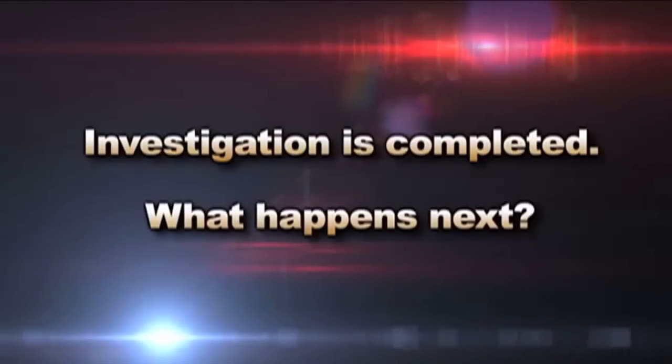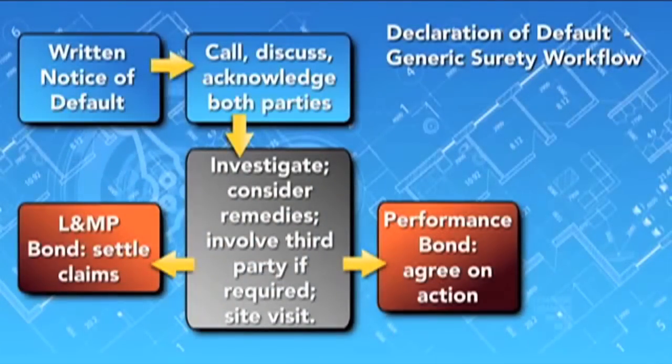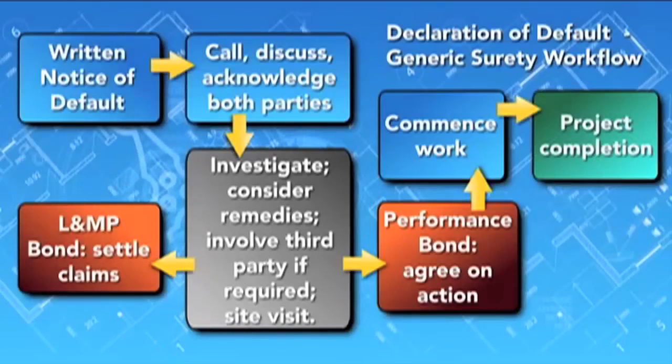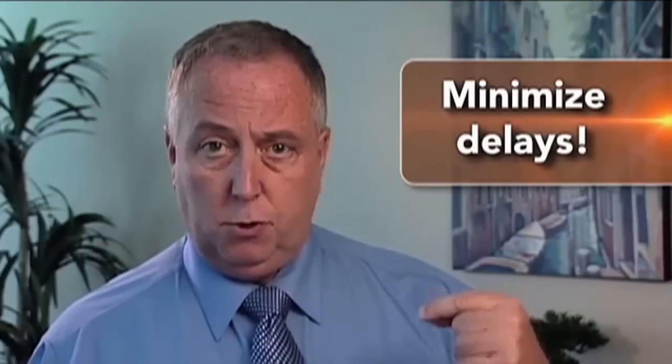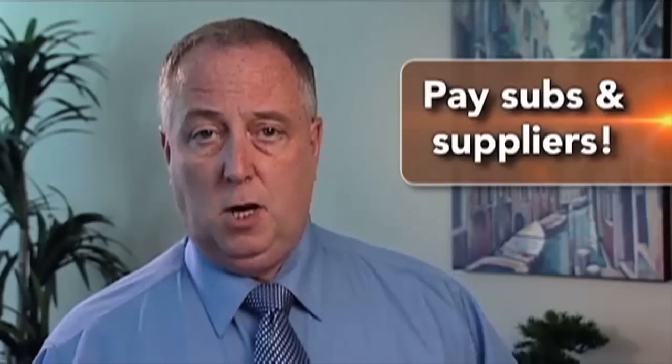Once the investigation is completed, if the surety concludes the contractor is in fact in default, they kick it into high gear. The first thing they'll do is make sure the work is protected from any damage or deterioration. Then they'll work with you to map out the best method for bringing the half-completed job to a successful conclusion. They'll have two objectives: first, minimize delays and make sure work can proceed as expeditiously as possible without interruptions, because interruptions can be both costly and frustrating. Second, make sure all labour and material payment bond claims are paid promptly, ensuring subcontractors and suppliers stay on the job and the construction team remains intact.